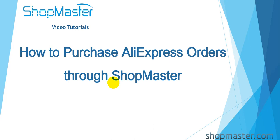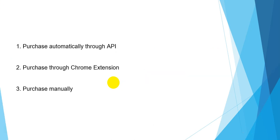Hello everyone. I will show you how to purchase AliExpress orders through Soundmaster in this video. There are three ways: purchase automatically through AliExpress dropshipping API, purchase through Soundmaster Chrome extension, and purchase orders from AliExpress manually.